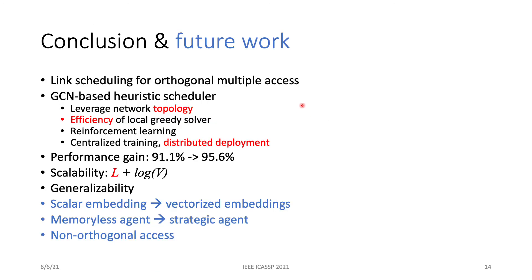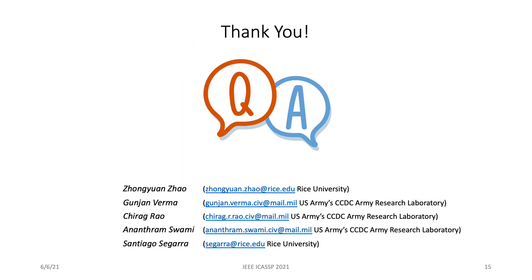In this talk, we studied link scheduling for orthogonal multiple access. We developed a GCN-based heuristic scheduler that can leverage the topology of the network and keep the efficiency of the local greedy solver. Moreover, it can be deployed in a distributed manner. Our solution has been shown to have good performance, scalability, and generalizability. There are three directions for future work. First, is to use vectorized embeddings for better performance. Second, is to extend the memoryless agent to a more strategic agent. Third, is to study more realistic non-orthogonal access. Thanks for listening. Please leave your comments and questions.